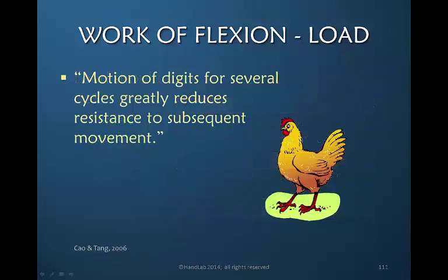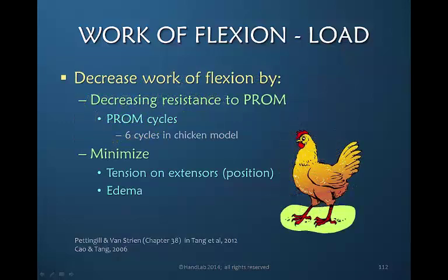We know that moving a digit with a flexor tendon repair through several cycles of passive flexion will greatly reduce the resistance to any subsequent motion. It is our responsibility to decrease the work of flexion by first decreasing the resistance to passive motion. This is particularly true if the patient is on an early active protocol — you still want to precede active flexion with passive motion.